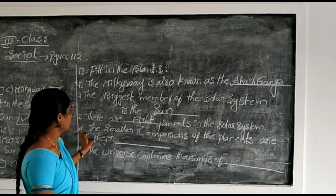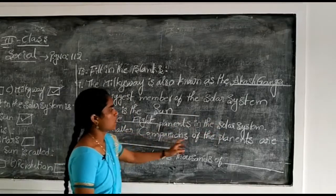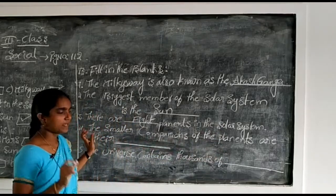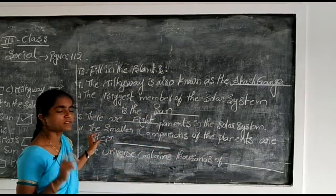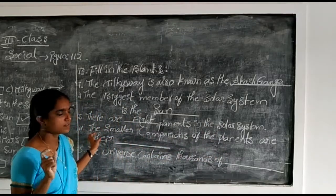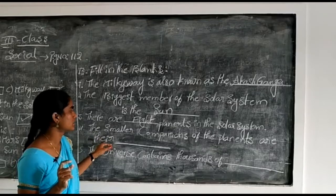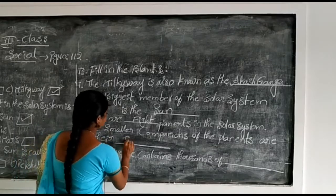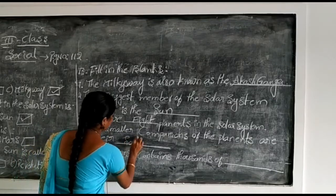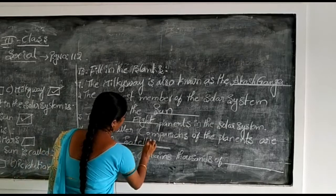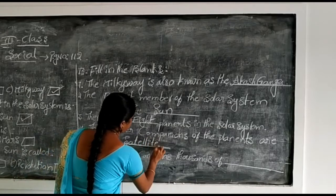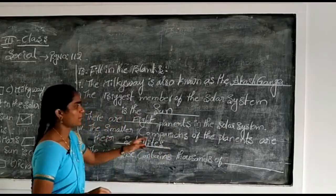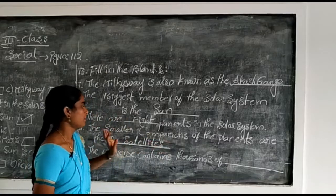Fourth one: the smaller companions of the planets are what? What are the smaller companions of the planets? Yes, satellites. Satellites are the companions of the planets.